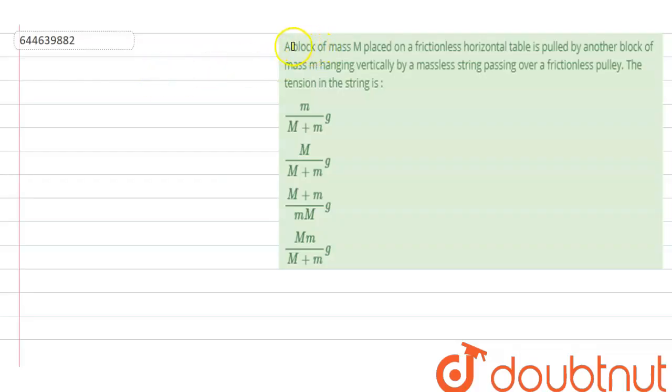Hello students, so the question is: A block of mass capital M placed on a frictionless horizontal table is pulled by another block of mass small m hanging vertically by a massless string passing over a frictionless pulley. The tension in the string is.